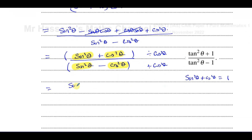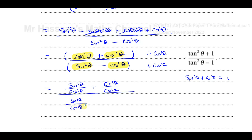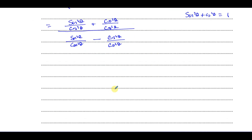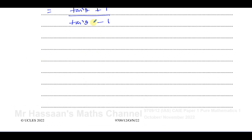So I divide every term by cosine²θ: sine²θ divided by cosine²θ gives tan²θ, and cosine²θ divided by cosine²θ gives 1. The same in the denominator: sine²θ ÷ cos²θ − cos²θ ÷ cos²θ gives tan²θ − 1. That gives us our answer: (tan²θ + 1) over (tan²θ − 1). We've proved the identity.